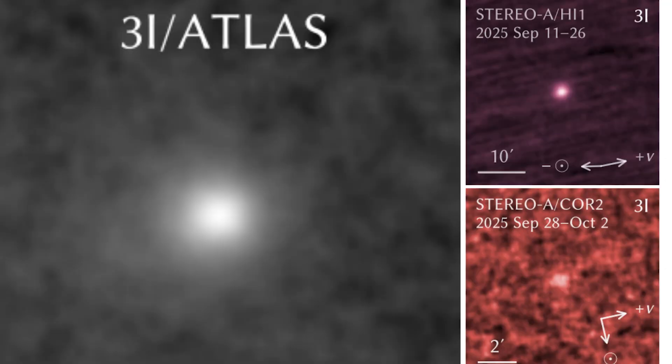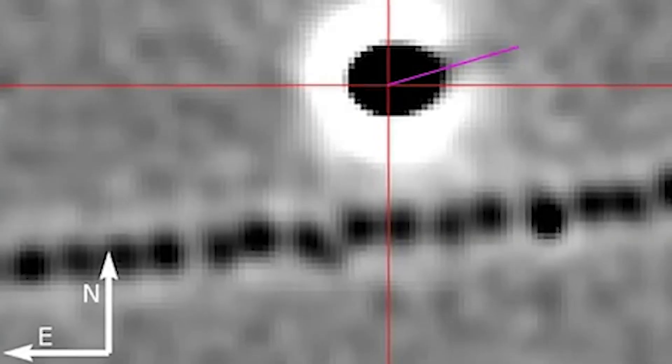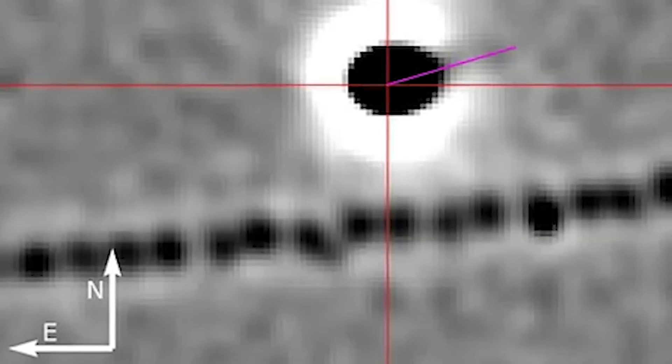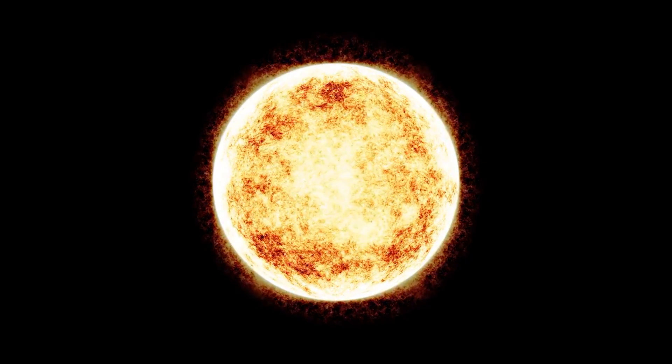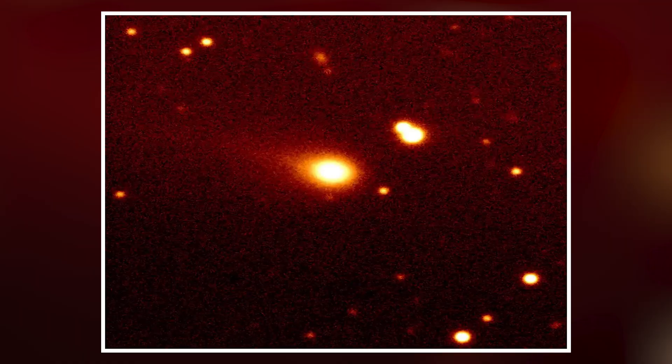The moment scientists checked the heat map, things got even stranger. The area between Atlas and the ring was slightly warmer, not hot, but warm enough to show that energy was moving outward from the object. It wasn't sunlight, it wasn't reflected heat, it was coming from inside Atlas.